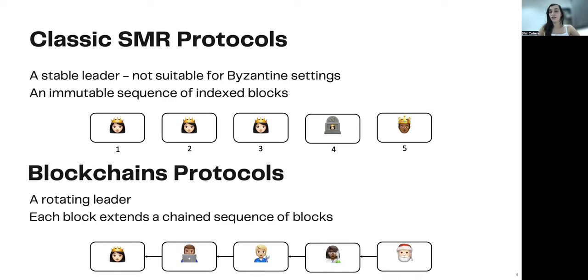So, in blockchain protocols, there are two essential changes. First, we use a rotating leader, meaning that each block is derived by a potentially different leader. Secondly, blocks are not fixed by their index, but rather by chaining. Each block extends a sequence of blocks, for example, by solving some hash riddle. In this work, we focus on the leader election part.